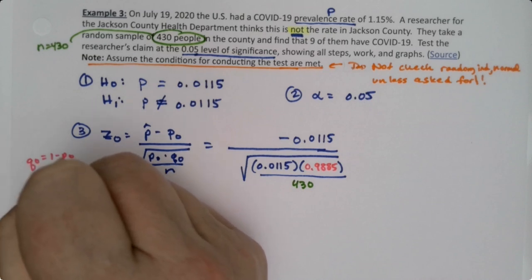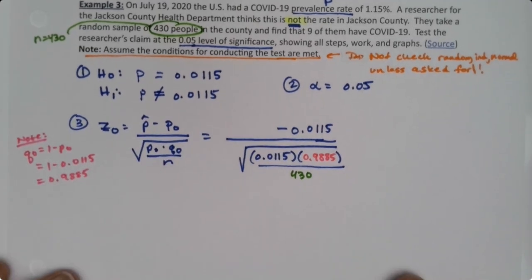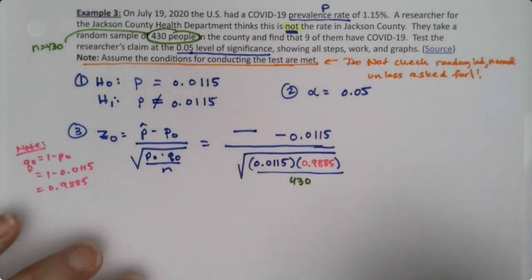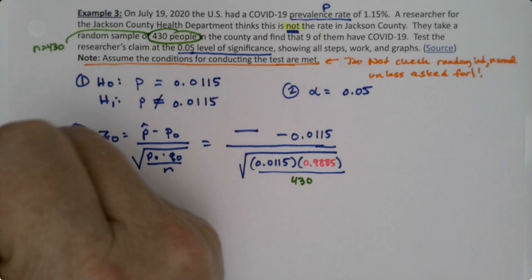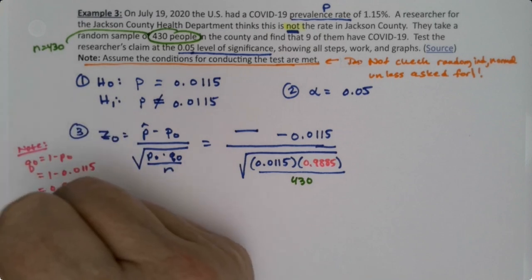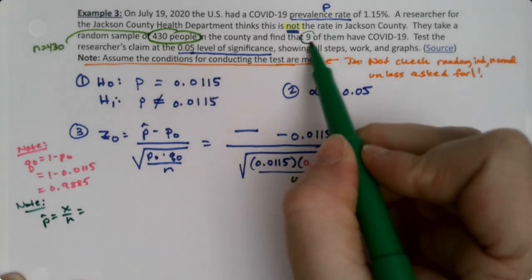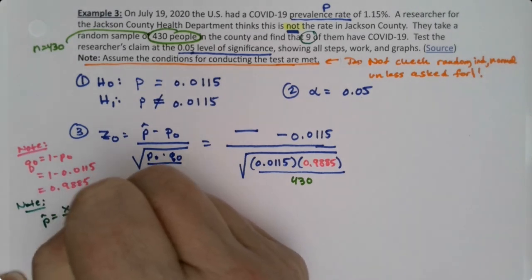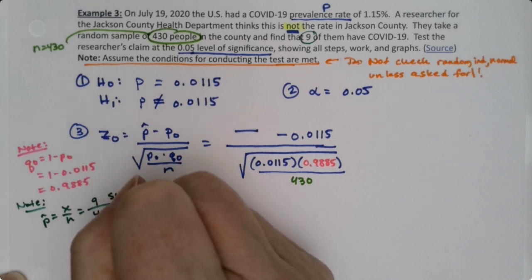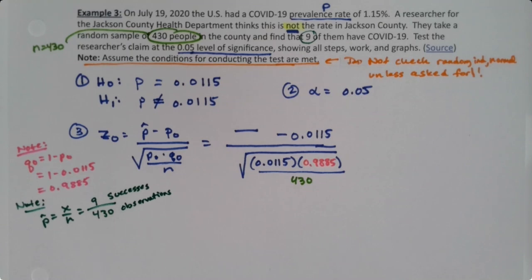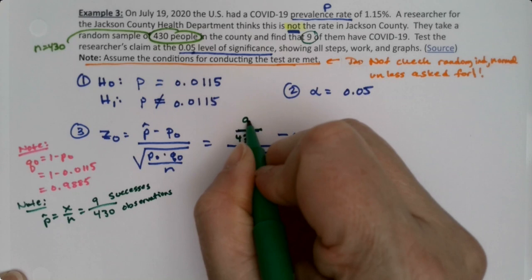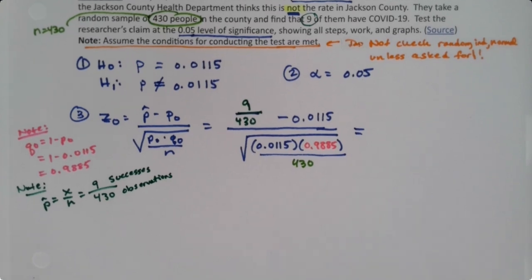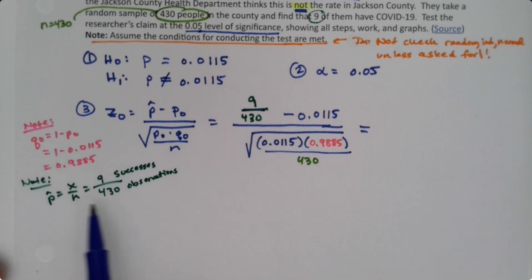Now what about p-hat? Well, I didn't give p-hat on this one—I gave x. So p-hat is x over n. Remember, p-hat is x over n, but x is right here: it was 9 COVID positive out of 430. Nine successes out of 430—that's successes, that's observations. Remember, success is not a good or bad thing, we learned that in chapter six; it just is what it is. So I'm just going to write that 9 over 430. I'll make StatCrunch figure it out.